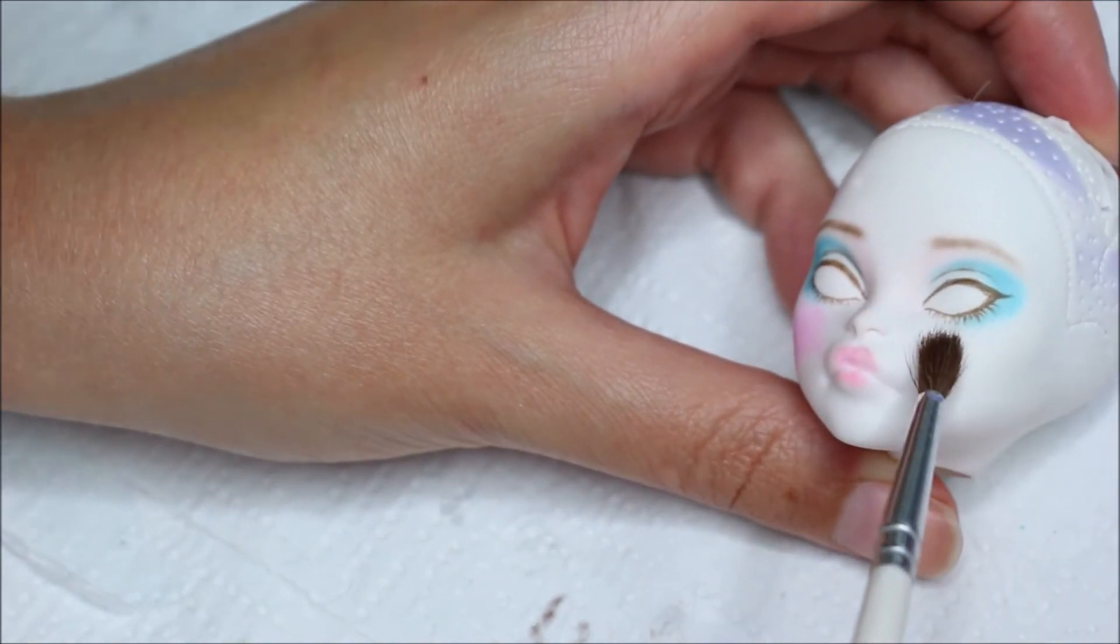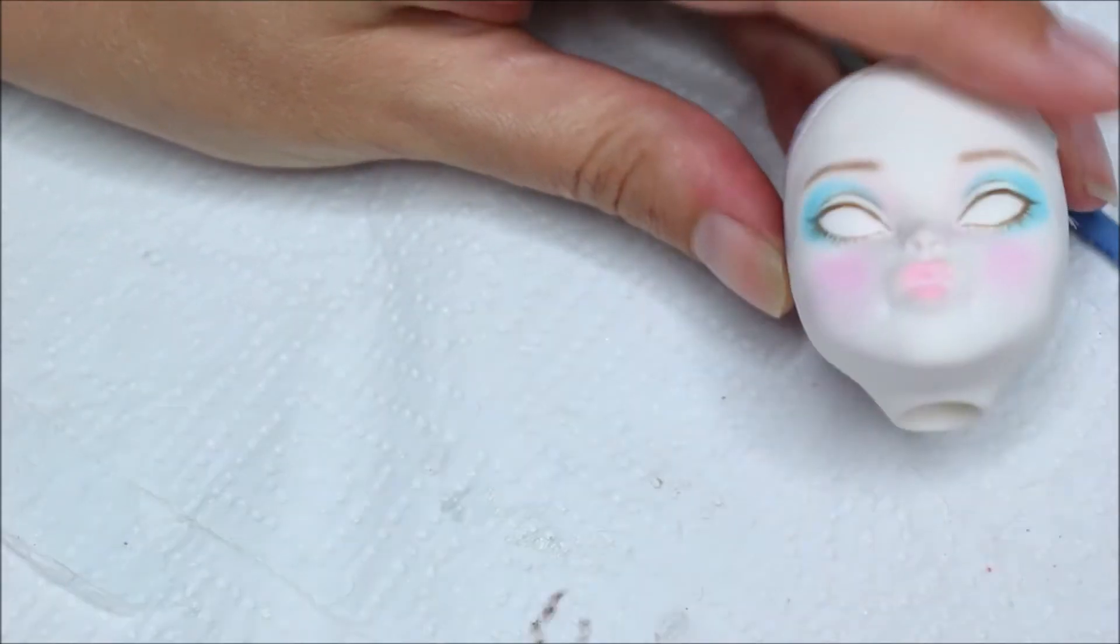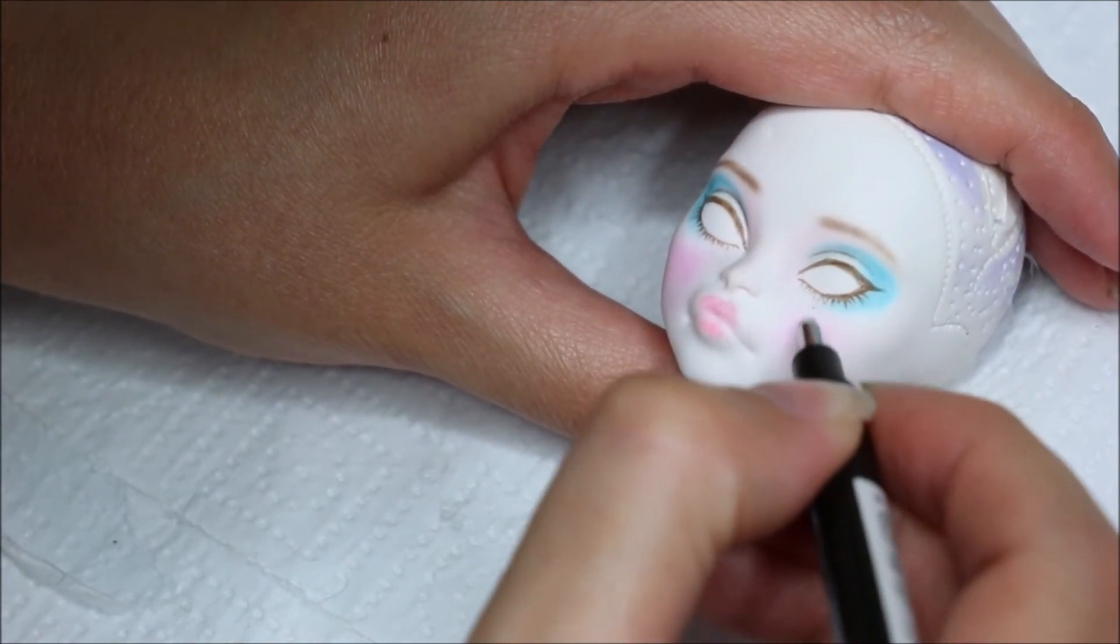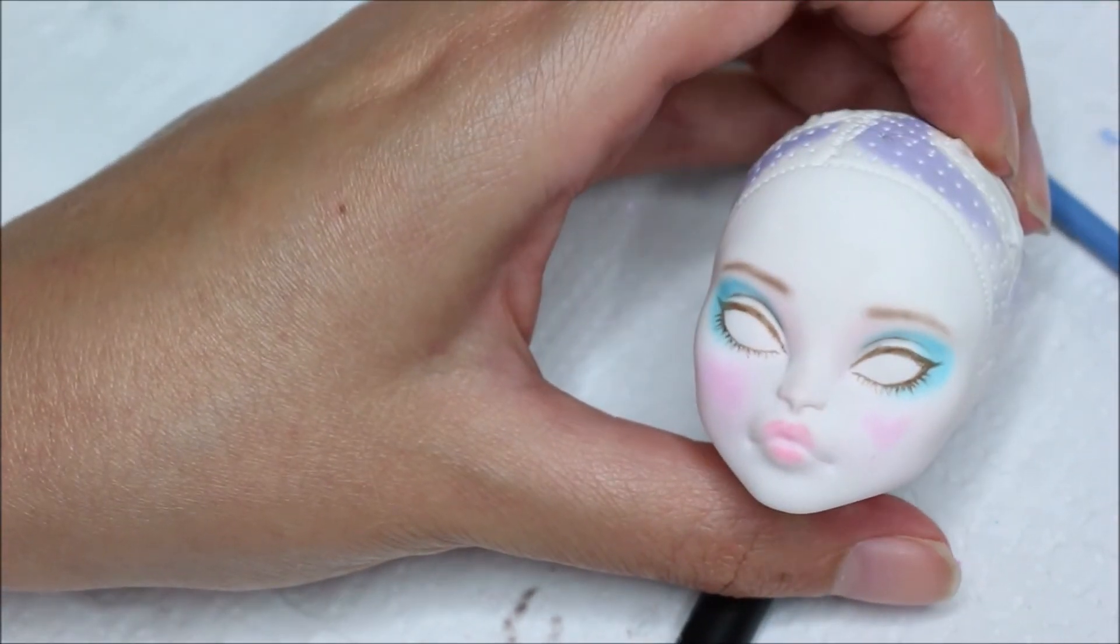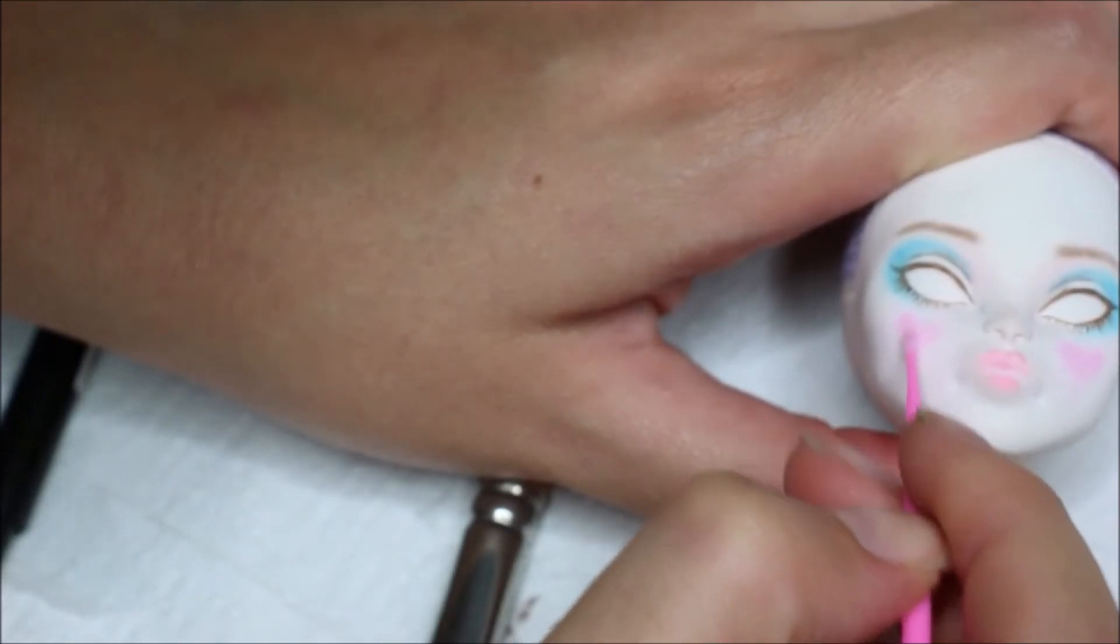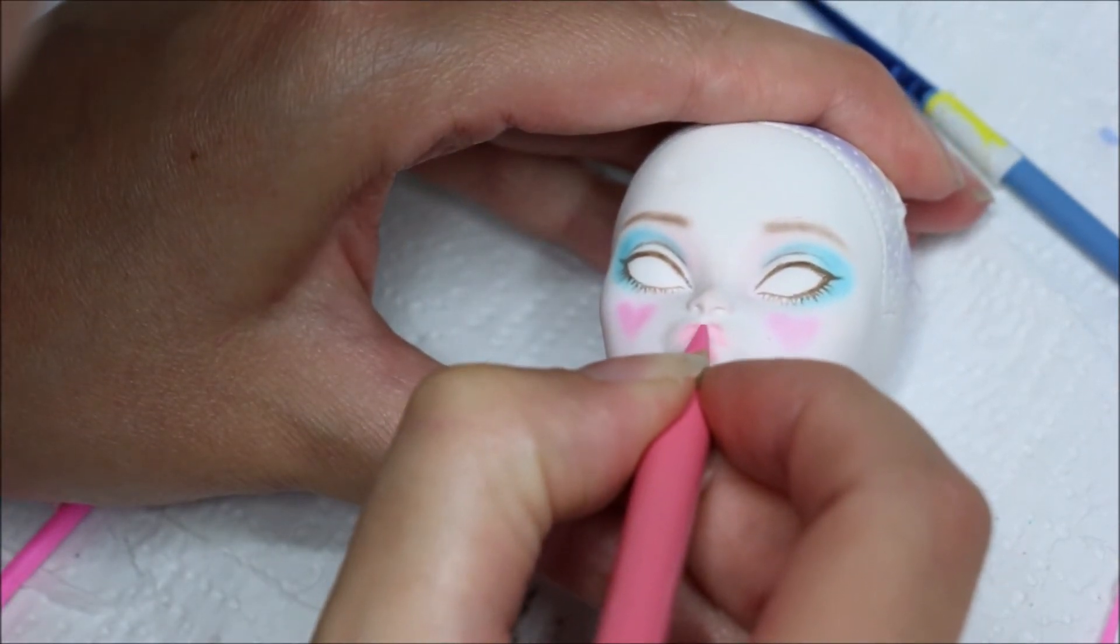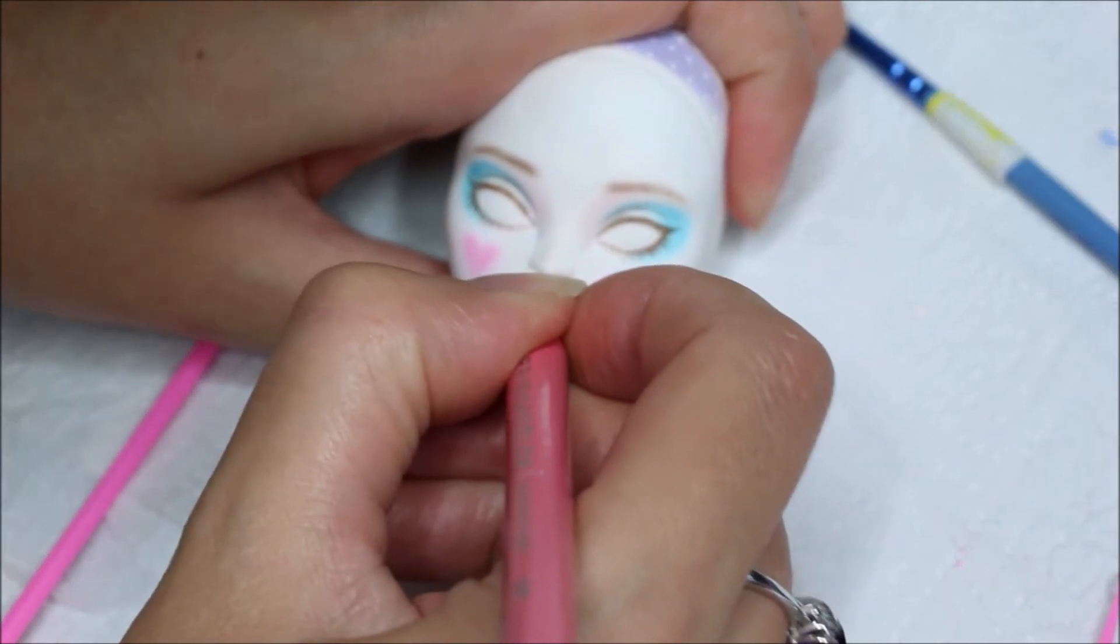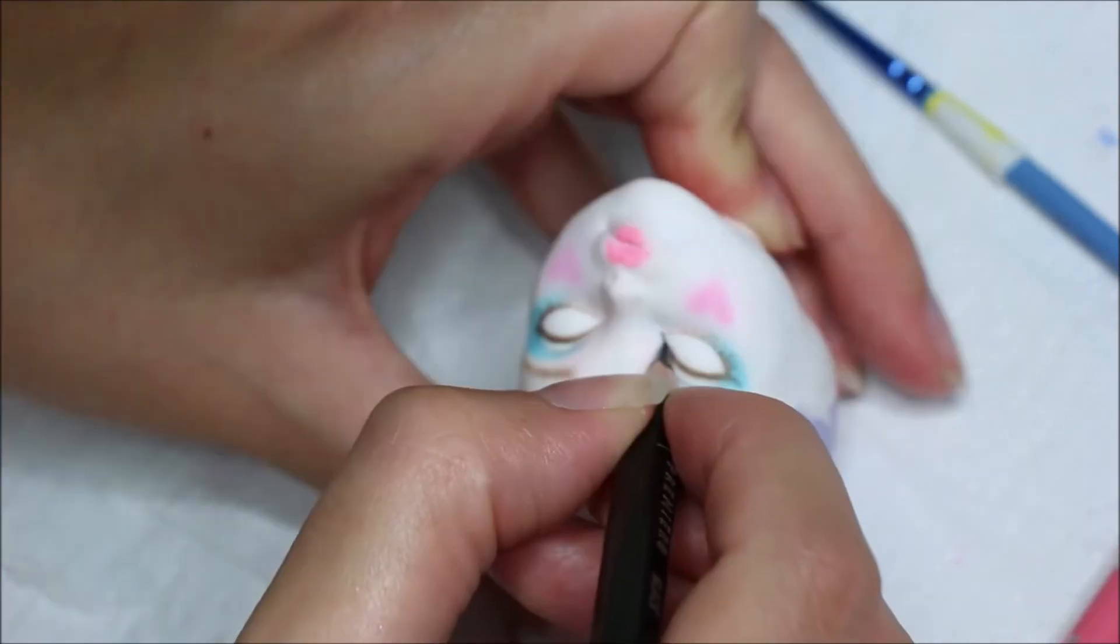Now I can continue by intensifying the eyeshadow and going over everything before I go on the next layer of Mr. Super Clear. I decided for her blush to make it into a heart shape. I'm creating these two little rounds with pastel and then I will be shaping them using my eraser. Using a tiny applicator to define my shape for the little hearts.